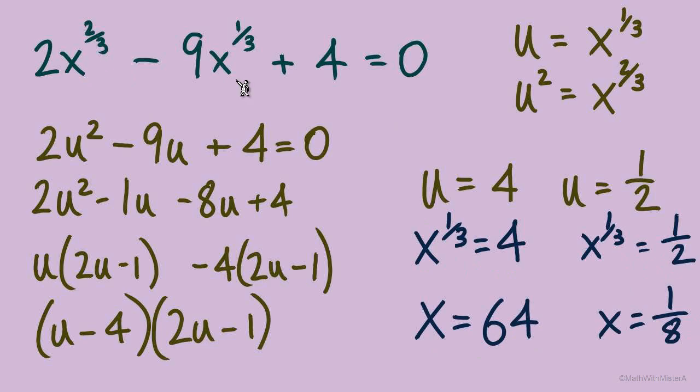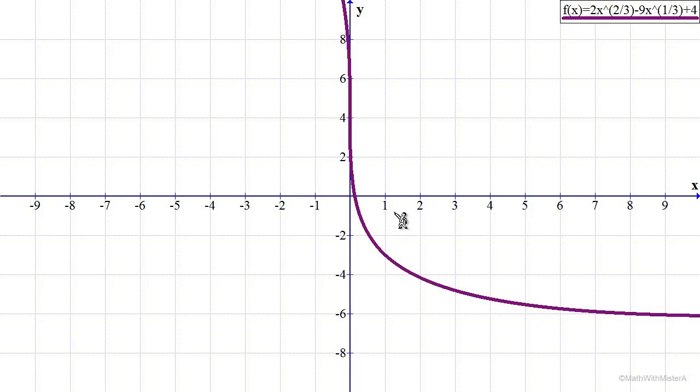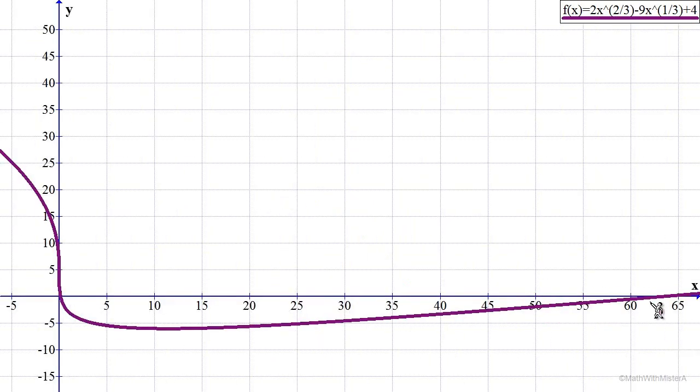We started out with an equation that was not quadratic, but it did have that pattern. A substitution so we can look at an actual quadratic while we do our moves like factor and solve. Substitute back in at the end and understand what operation is needed to solve for x. In this case, both sides needed to the third power. Let's take a look at this graph. We're looking for x-intercepts at 64 and 1/8. There's the intercept at 1/8, and if we zoom out, there's the other x-intercept at 64.